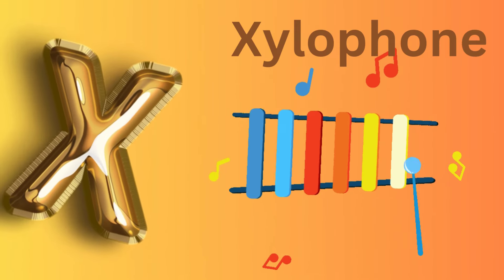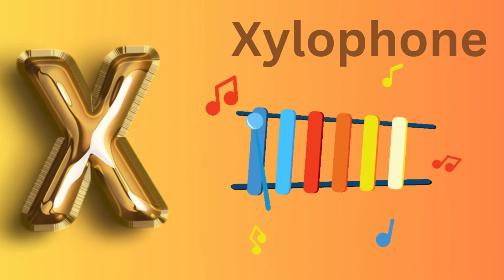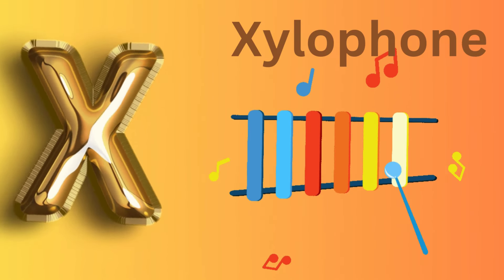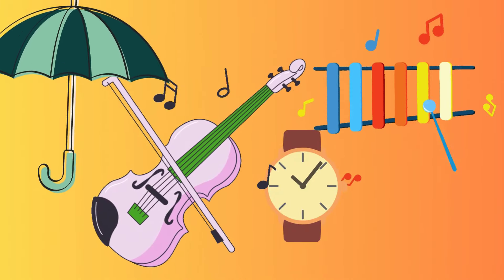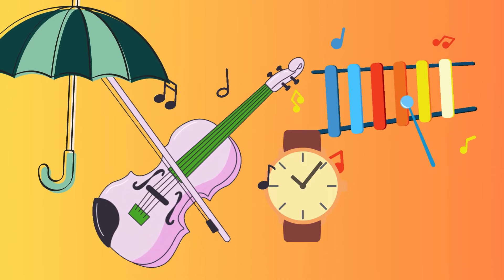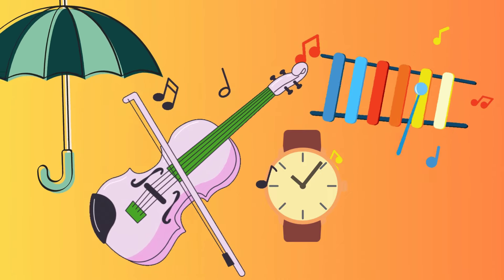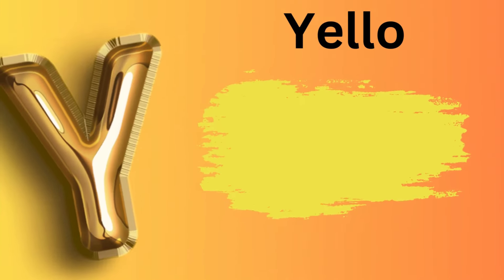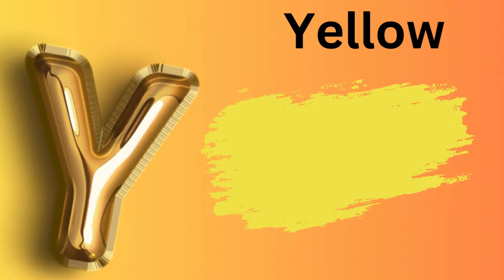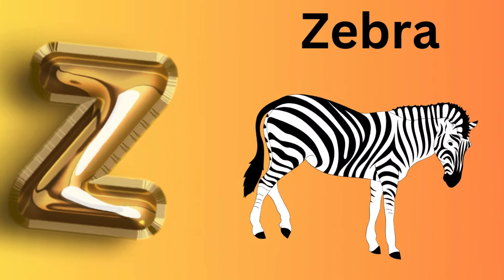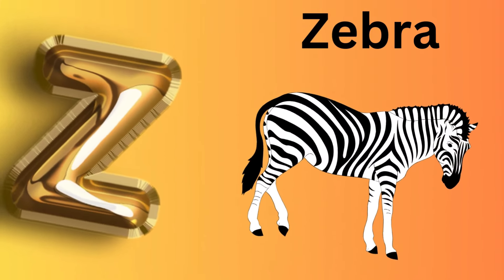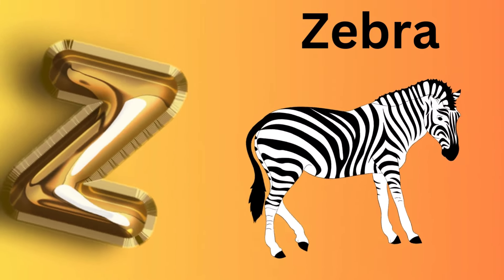X is for Xylophone. Z, Z, Xylophone. Y is for Yellow. Ye, ye, Yellow. Z is for Zebra. Z, Z, Zebra.